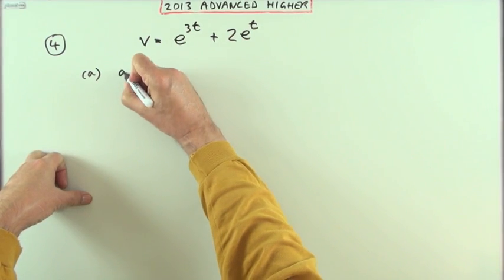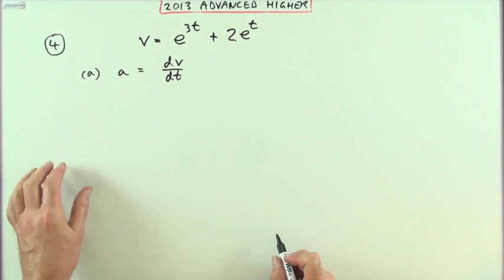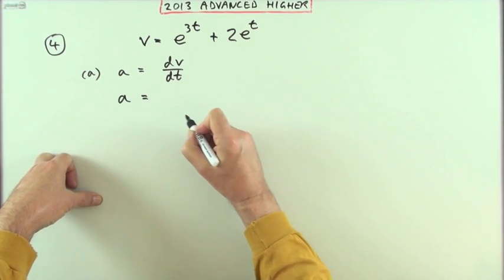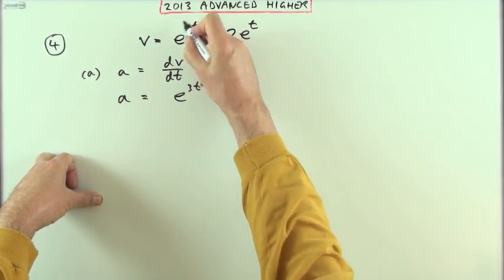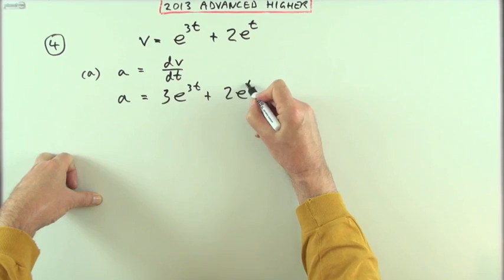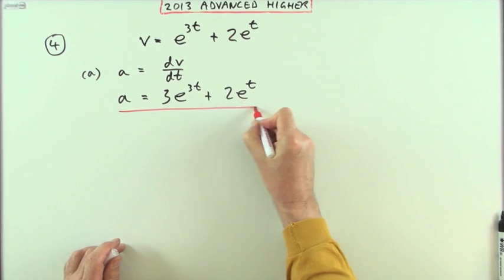Well, the acceleration is the rate of change of velocity. You're not going to accelerate unless your velocity changes. So that simply means I'm going to differentiate that. The acceleration will be given by e to the 3t multiplied by the inner derivative 3 plus, and that just stays as 2e to the t. And that's it done. And that was 2 marks.